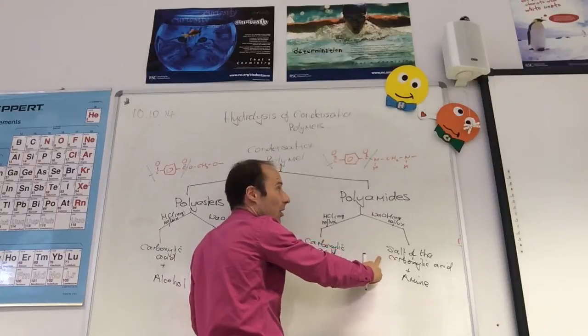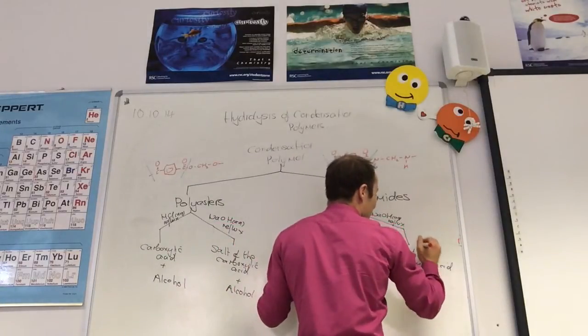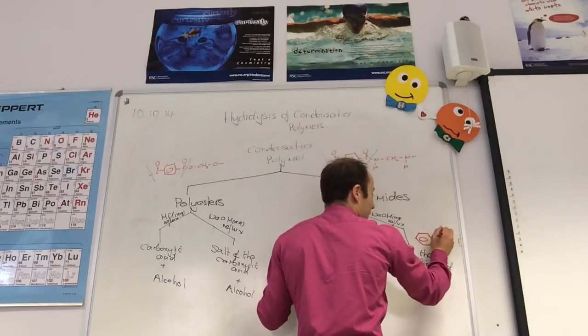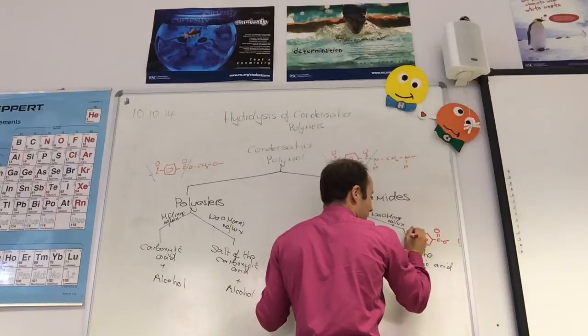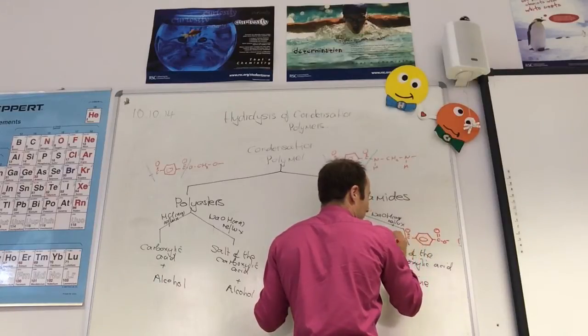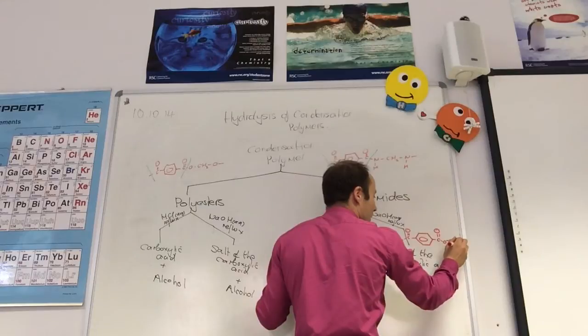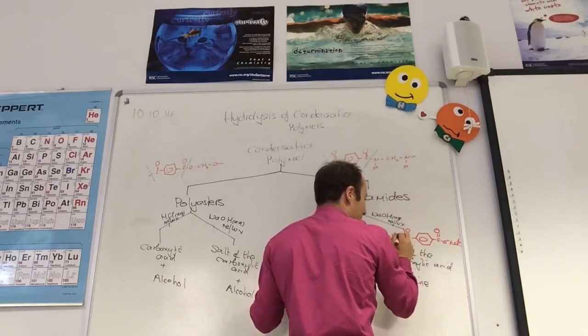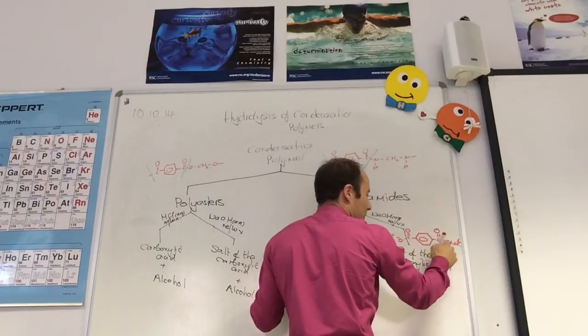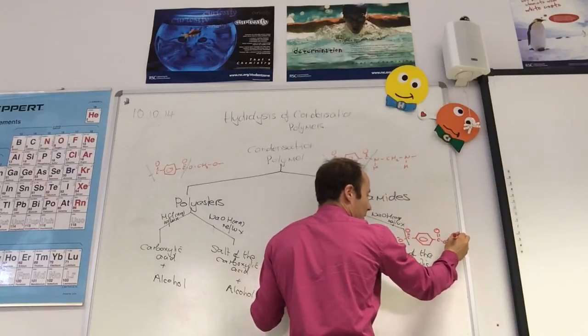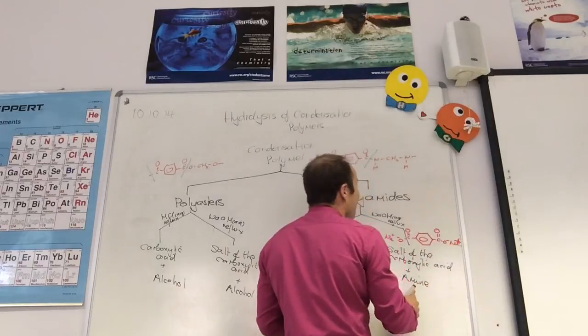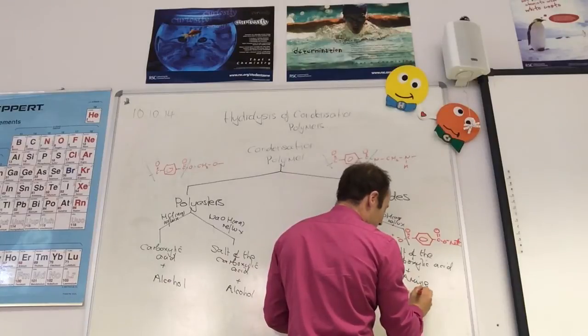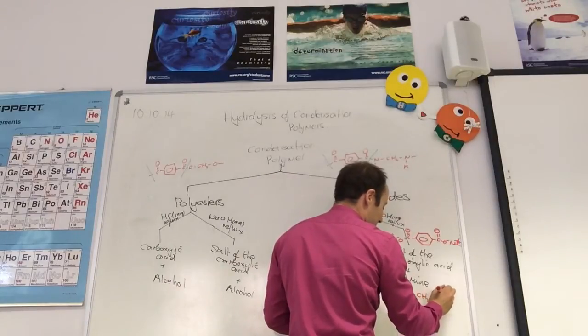I'm going to make the salt of the carboxylic acid. So that is going to be the benzene ring, O minus, O minus. And I've used sodium hydroxide, so Na plus. That's O minus, not a covalent bond. O minus, Na plus. And the amide, if I hydrolyze that, is going to split to give me that little guy there.